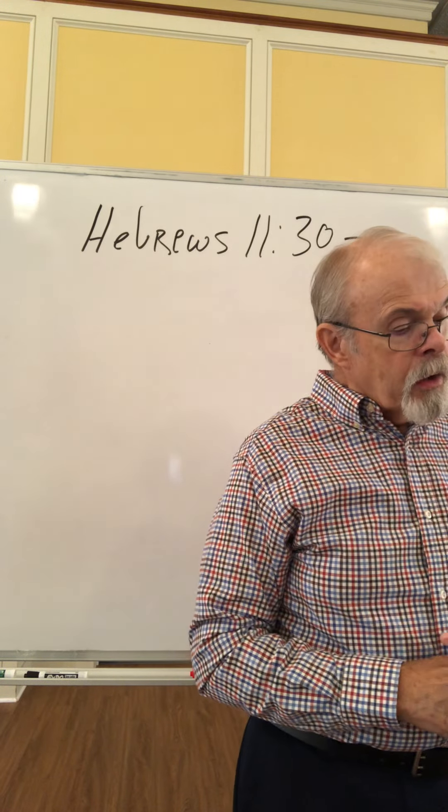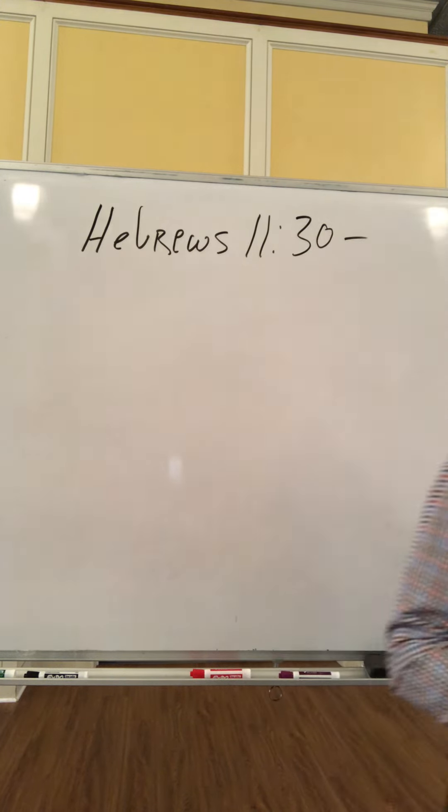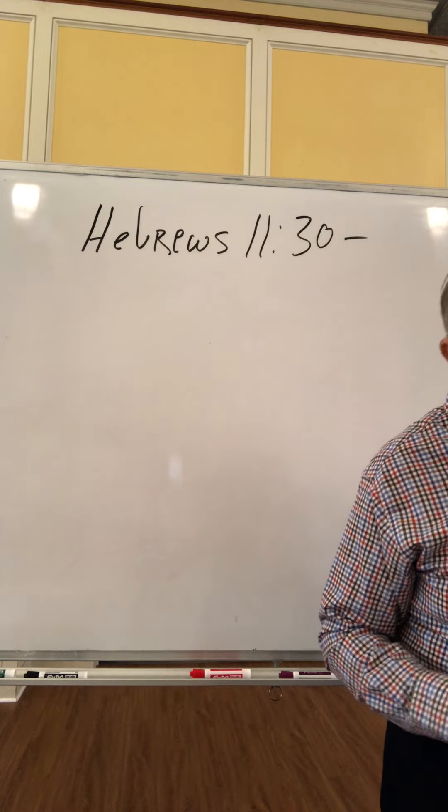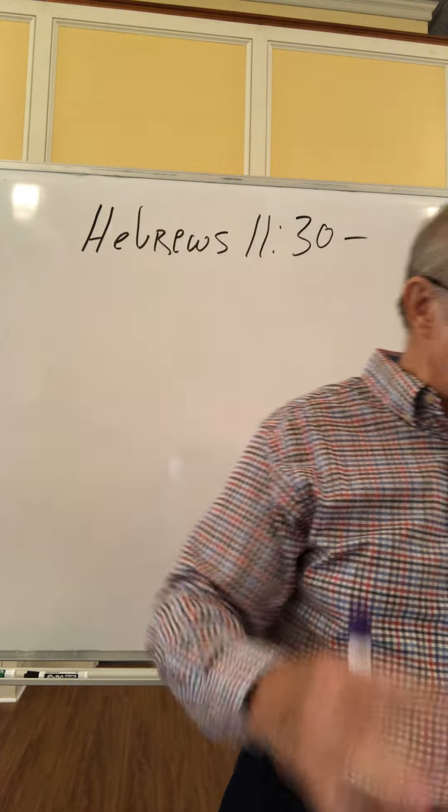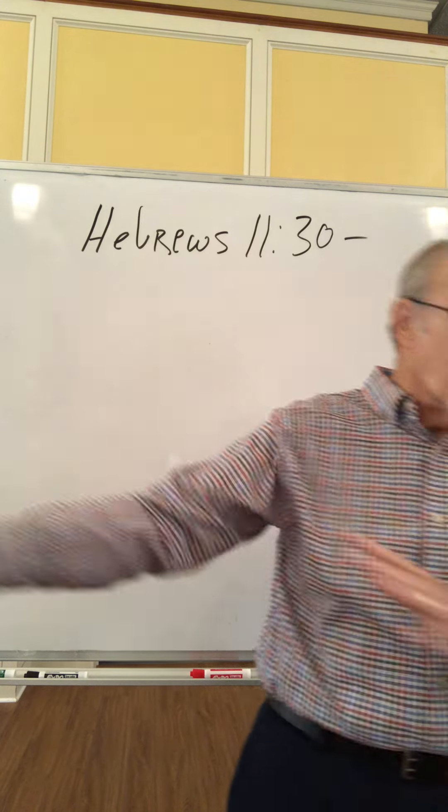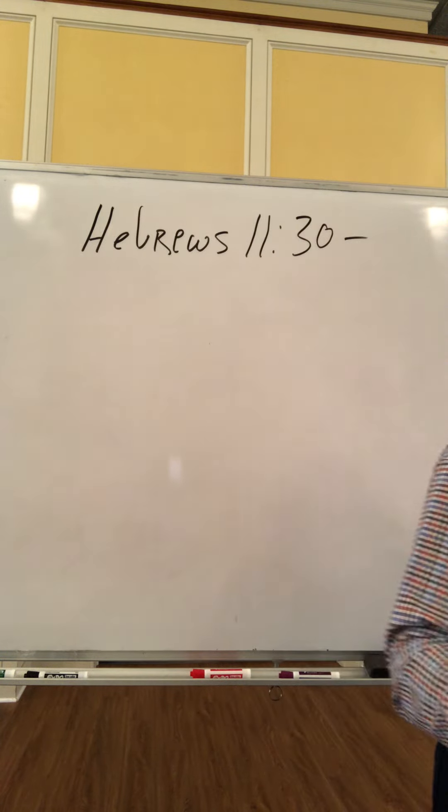We're going to run into some interesting points as we go into verses 30 and 31 of our passage. Reading from the New International Version: By faith the walls of Jericho fell after the people had marched around them for seven days. By faith the prostitute Rahab, because she welcomed the spies, was not killed with those who were disobedient. As the writer to the Hebrews is working through the history of Israel, showing that faith from the very beginning generated acceptance with God, he goes into the early days of Israel entering the land of Canaan.